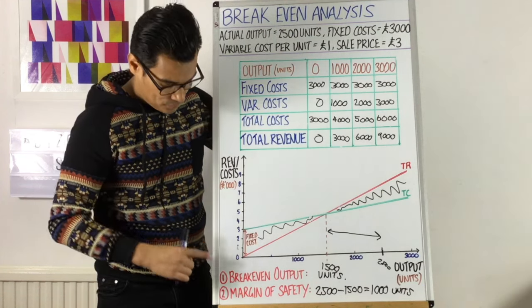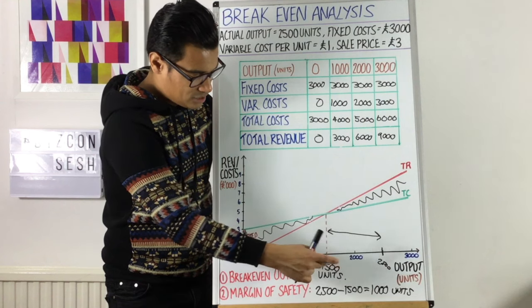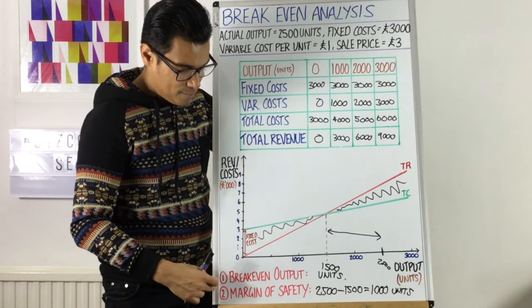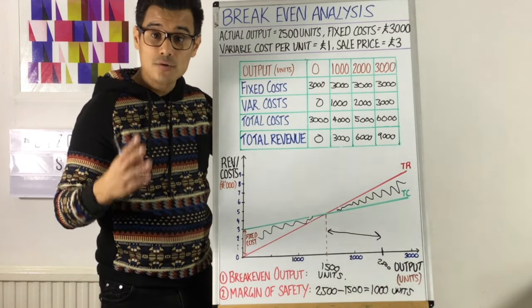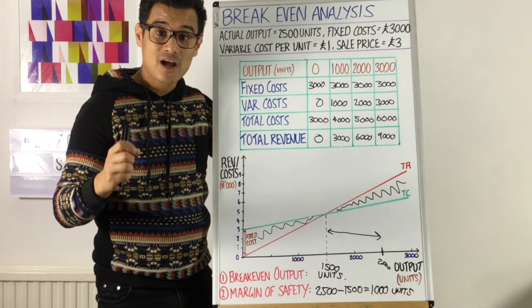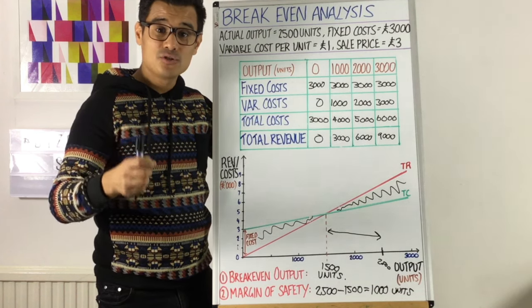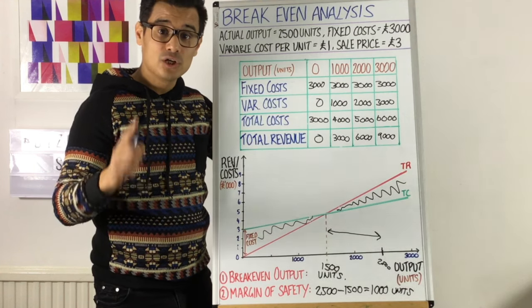Important things to know, breakeven output, just simply where the two points cross, that's the units, never forget units, and the margin of safety, the actual output minus the breakeven output. I hope that helps with breakeven analysis. Make sure you stay tuned and check out the video on breakeven pros and cons, because that could also be a longer question in your exams. Good luck.